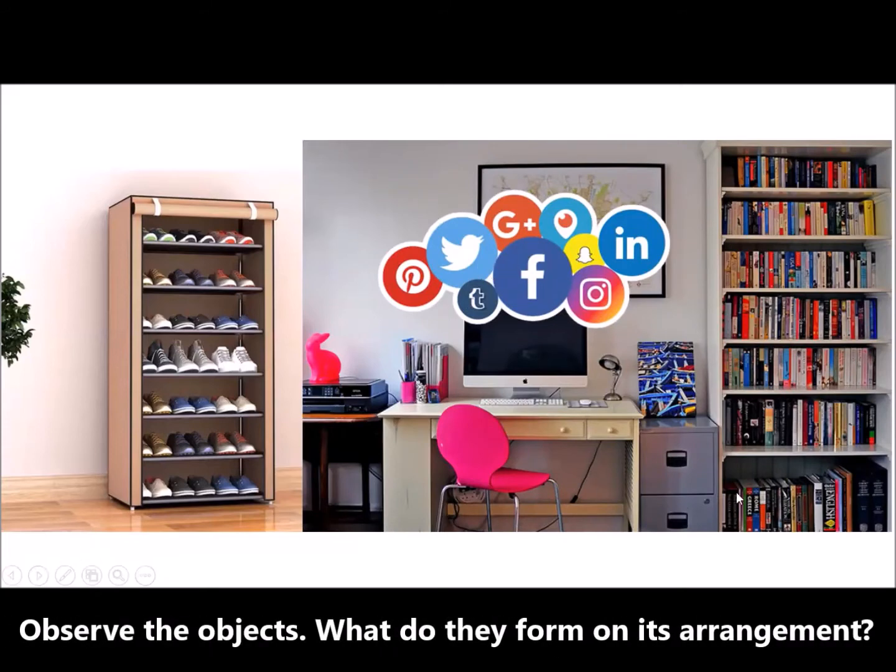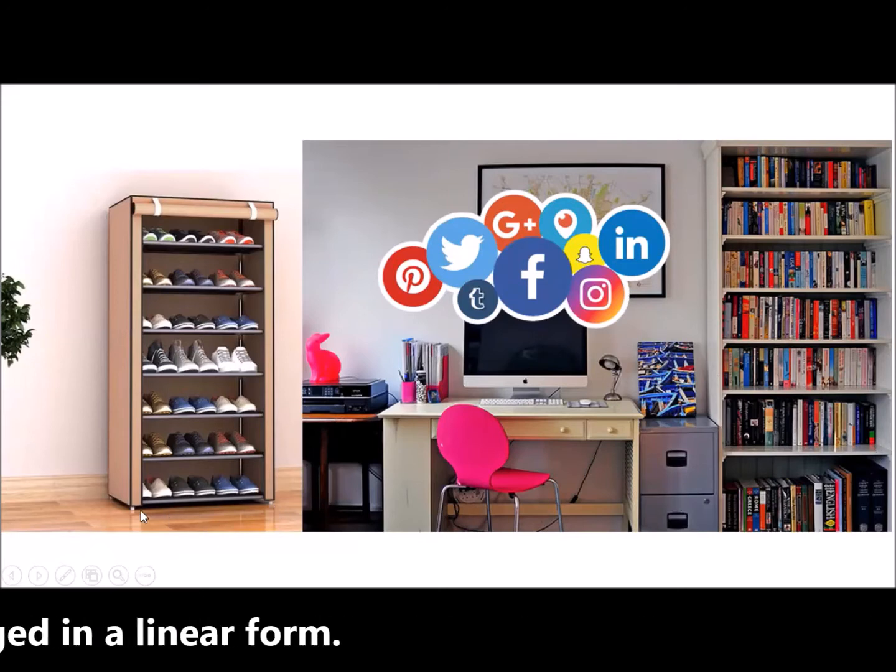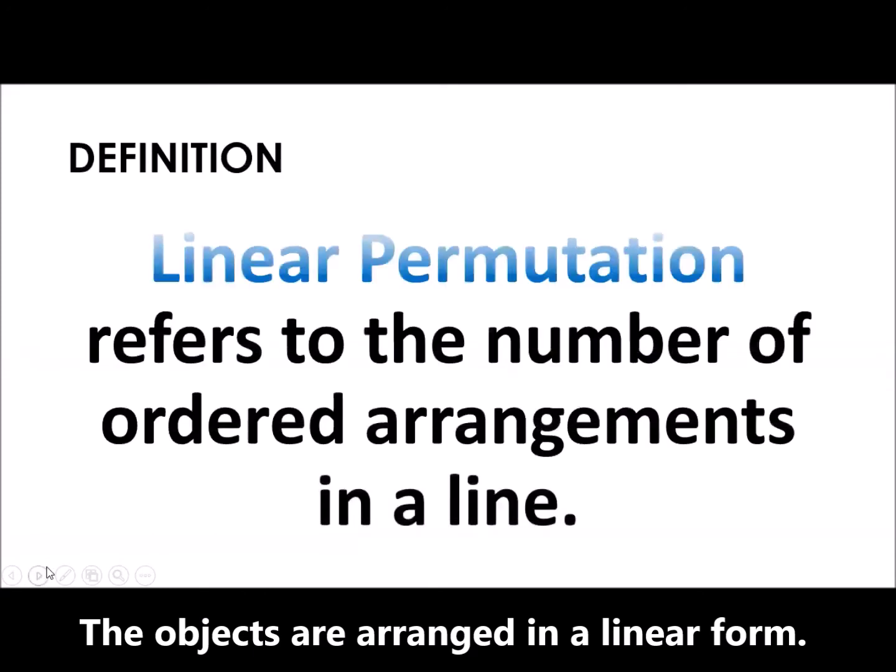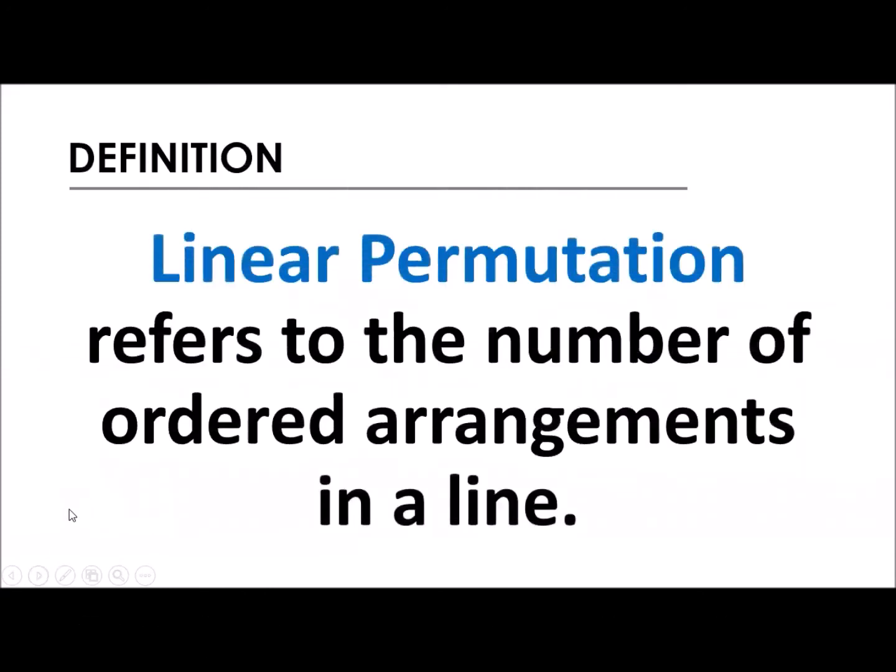And what can you notice on these objects, on these arrangements? It forms a line. So that is linear permutation. Any kind of arrangement that forms a line with different objects, so that is linear permutation.